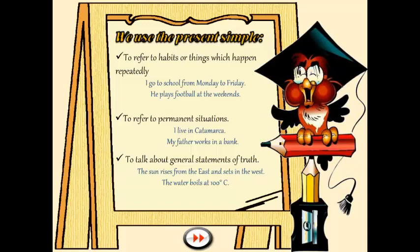El segundo uso es para referirnos a situaciones permanentes. El ejemplo es 'yo vivo en Catamarca' — bueno, yo soy de La Rioja pero vivo en Catamarca, entonces el hecho de vivir en Catamarca es una situación permanente para mí; al menos por ahora no pienso mudarme. 'My father works in a bank' — mi padre trabaja en un banco; es una situación permanente para mi padre hasta que se jubile, entonces por eso hablamos de una situación permanente.